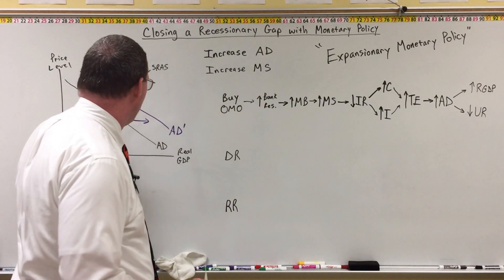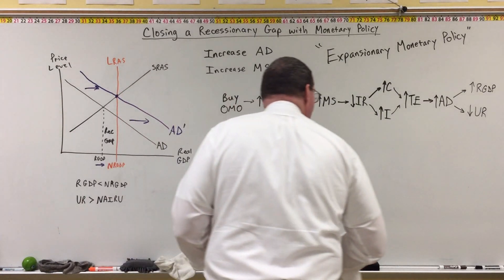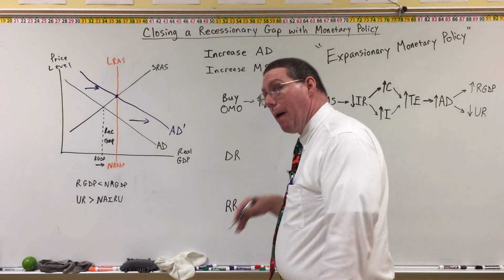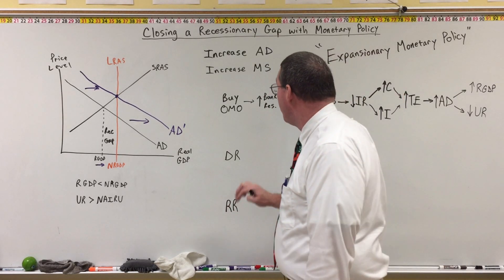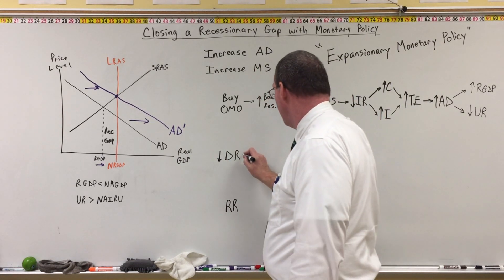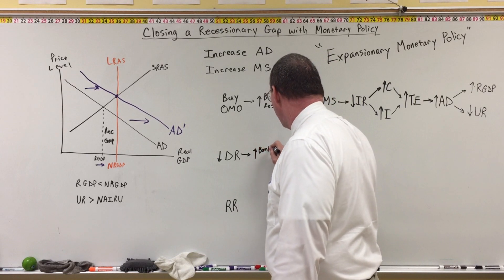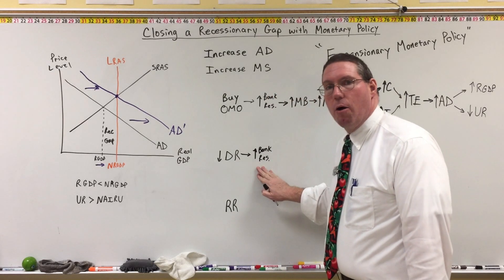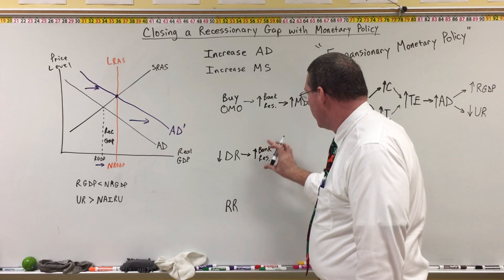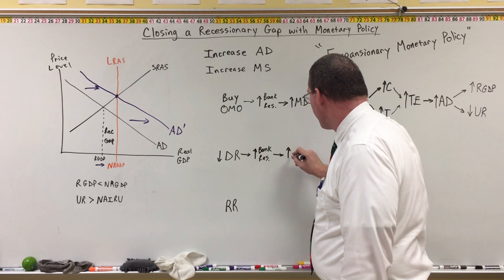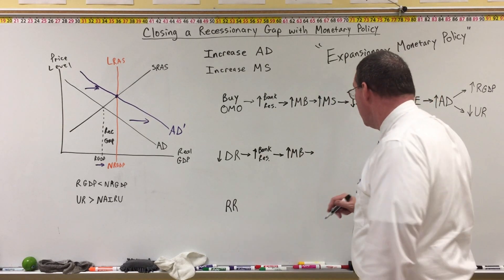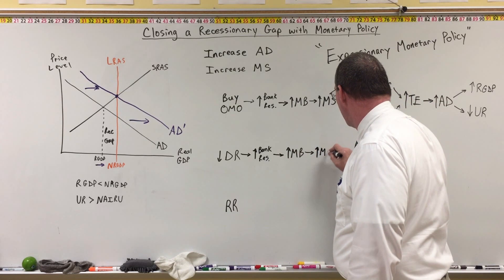If open market operations don't close the recessionary gap — if we didn't have the effect on aggregate demand we hoped for — the Fed may move to the discount rate. To increase the money supply, the Fed decreases the discount rate. When they decrease the discount rate, that leads to an increase in bank reserves, because banks are now interested in borrowing more money from the Fed to loan out. Since bank reserves are part of the monetary base, that's an increase in the monetary base.